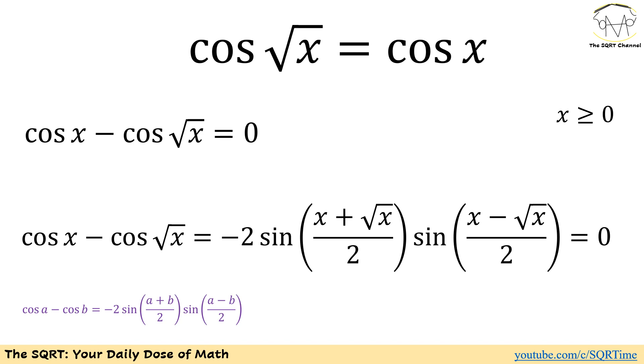Now I'm going to use cosine of a minus cosine of b equals to negative 2 times sine of a plus b over 2 times sine of a minus b over 2. If we do this, then we are going to have cosine of x minus cosine of radical x equals to negative 2 times sine of x plus radical x over 2 times sine of x minus radical x over 2. This needs to be 0.